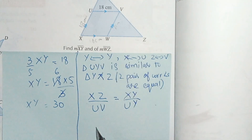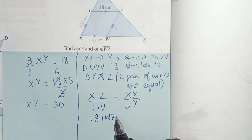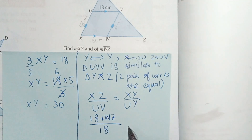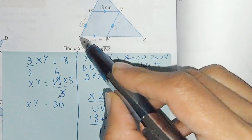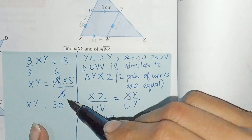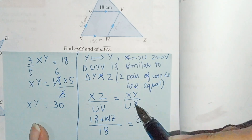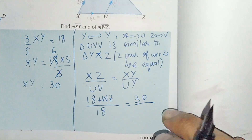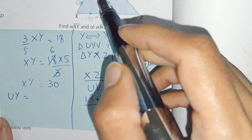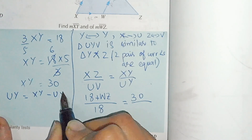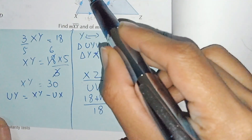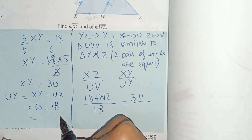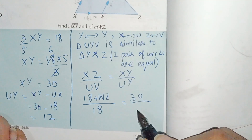XZ is 18 plus WZ. UV is 18, which is given in the question. XY equals 30 as we found. To find UY: UY equals total XY minus UX, which is 30 minus 18 equals 12. So UY equals 12.